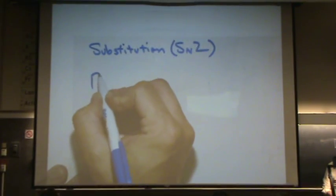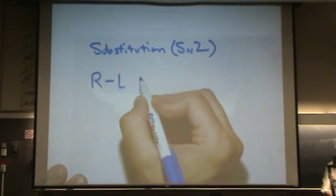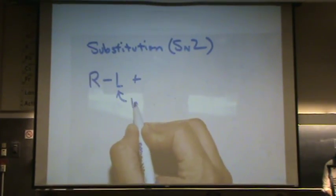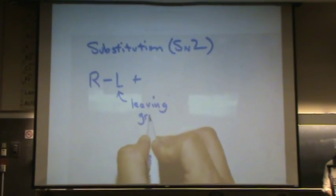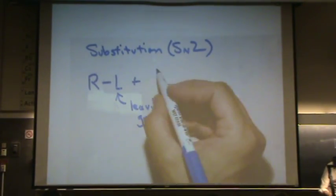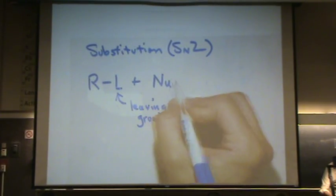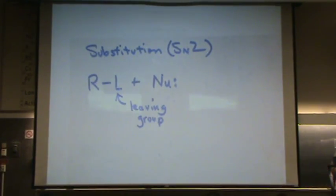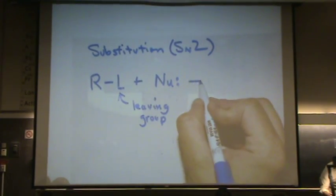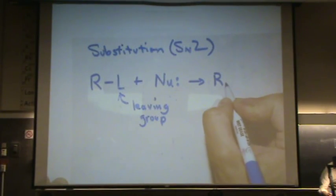So here's how this works — this is the very technical way of writing it. You have an organic with this thing labeled L, which is a leaving group. The leaving group is what will be substituted. You're going to add what's called a nucleophile — that's something that has a lone pair of electrons and wants a positive charge, so it wants to donate that lone pair. That nucleophile will substitute for the leaving group.